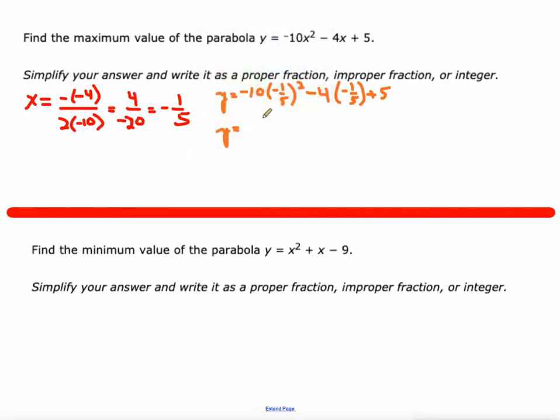So negative 10 times negative 1 fifth squared would be 1 twenty-fifth plus 4 fifths plus 5. Negative 10 times 1 twenty-fifth. How about we simplify that a little bit, like 5 goes into that 10 twice, 5 goes into that 5 times. So negative 2 fifths plus 4 fifths and we'll even turn the 5 into 25 fifths.